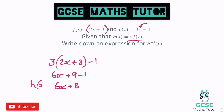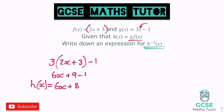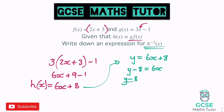Now it wants us to find the inverse function of h. To find the inverse, write it as y equals 6x plus 8, then make x the subject. y minus 8 equals 6x, then divide by 6: y minus 8 over 6 equals x. Swap the x and y's, so the inverse function of h is x minus 8 divided by 6. That is our inverse function, x minus 8 over 6.